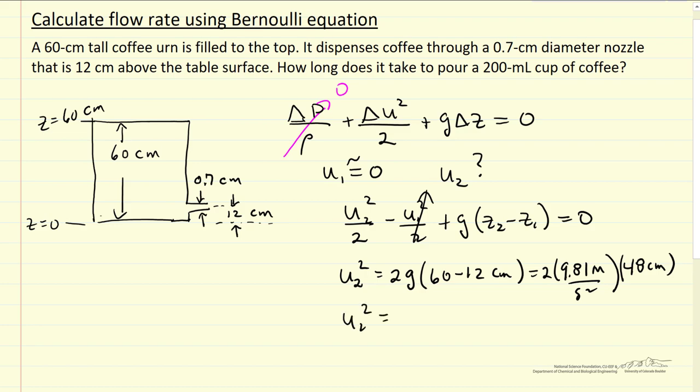So U2 squared equals two times 9.81 meters per second squared, 48 centimeters, and let's convert everything to centimeters. So 100 centimeters is one meter. Now we see units are going to be centimeters squared per second squared, which is what we expect for U2 squared. Calculate that number.